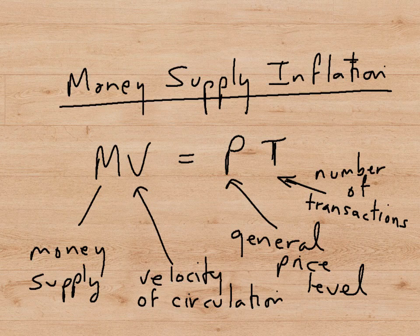More complicated is money supply inflation. The equation we use to understand it is MV = PT — the quantity theory of money equation. M is the money supply, V is the velocity of circulation, P is the general price level, and T is the number of transactions. Let's look at each of these in turn.